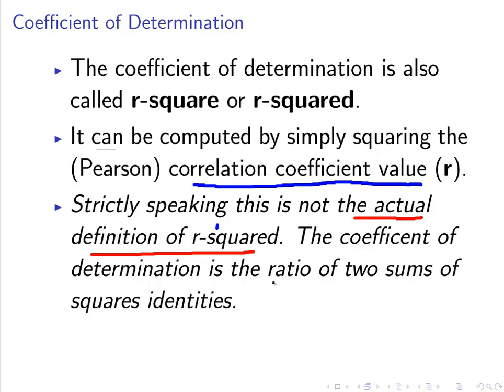It is more that it's coincidental that it works out to be the square of the correlation coefficient. It's a coincidence that for two variables X and Y they are so closely related. So I just want to emphasize that that's not the actual definition of r-squared. It's a coincidence really.